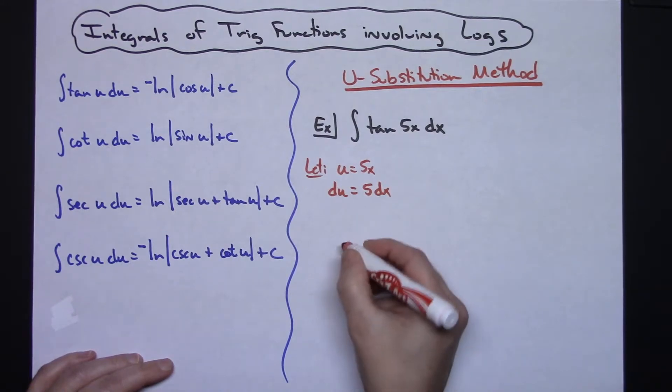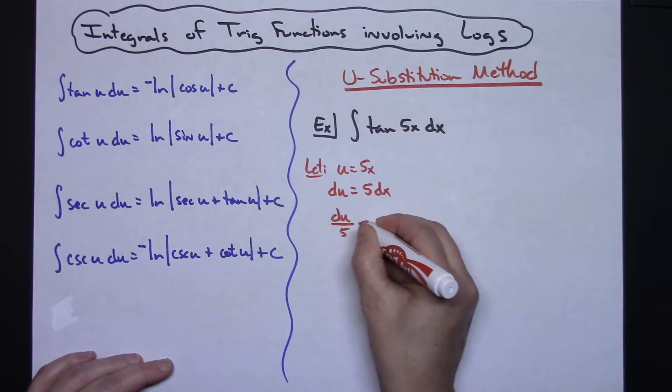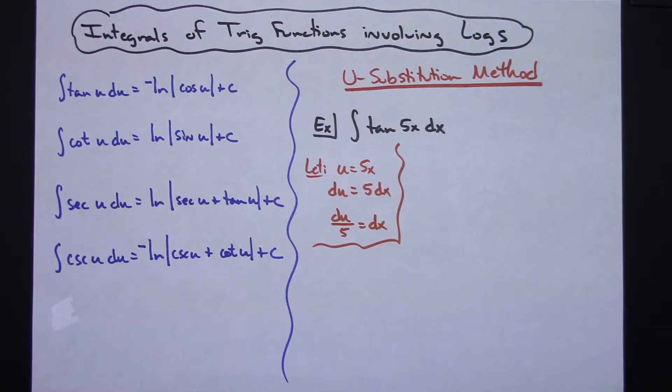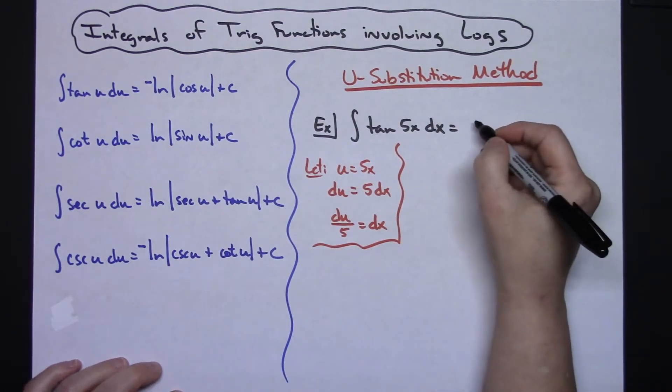If I solve for dx then I would have du over 5 equals dx. So there's my u substitution. Now let's come back up here to this original problem and do some substituting.